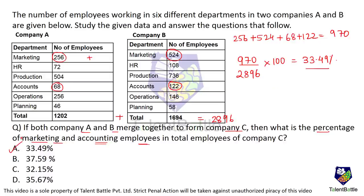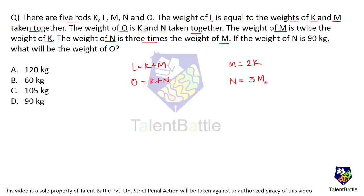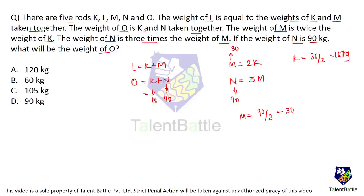There are five rods K, L, M, N, and O. L equals K plus M; O equals K plus N; M is twice K; N is three times M. Weight of N is 90 kg. So M = 90 divided by 3 = 30 kg. K = 30 divided by 2 = 15 kg. Weight of O = K plus N = 15 plus 90 = 105 kg. Option C is the answer.